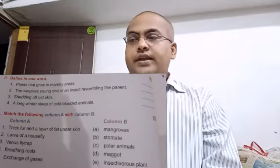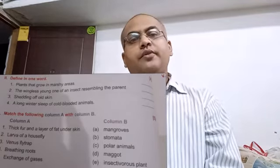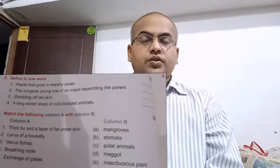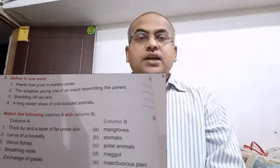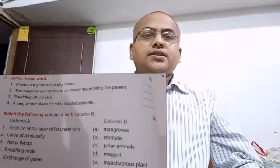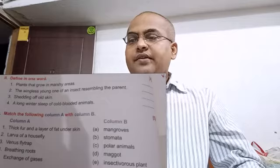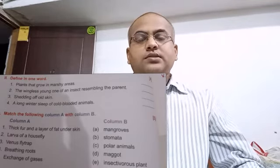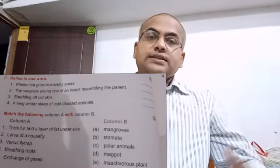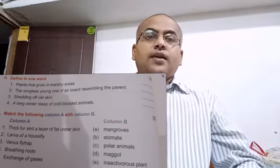The next section is 'Define in One Word.' There are sentences given and we have to read, understand them, and give the answer in one word. First question: Plants that grow in marshy areas. The answer is mangroves. Next question: The wingless young one of an insect resembling the parent. We know that from the eggs of an insect, an organism comes out which is similar to the adult but does not have wings. This organism is called a nymph.